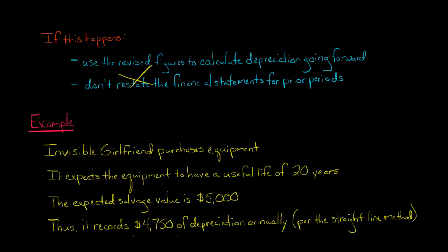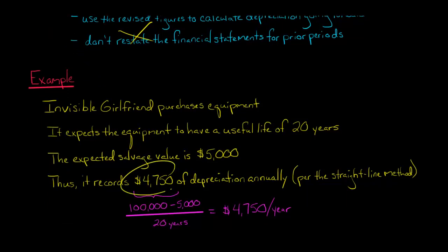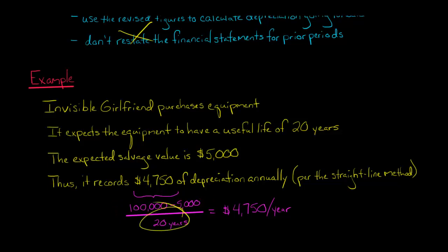Let's do an example. Let's say there's a company, Invisible Girlfriend, that purchases equipment. This is property, plant, and equipment, so they're going to depreciate it. They're expecting it will have a useful life of 20 years, and the salvage value — the residual value at the end of 20 years — would be $5,000. Assuming the company uses the straight-line depreciation method, the annual depreciation would be $4,750. You take the $100,000 cost minus the $5,000 residual value, divide by the estimated useful life of 20 years, and you get $4,750 a year.